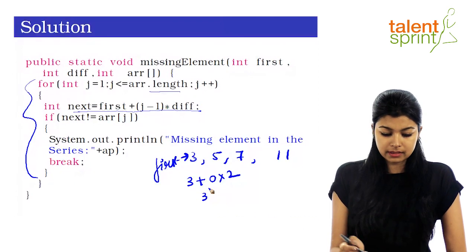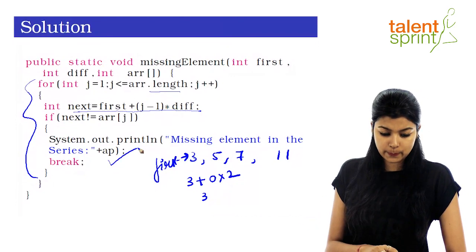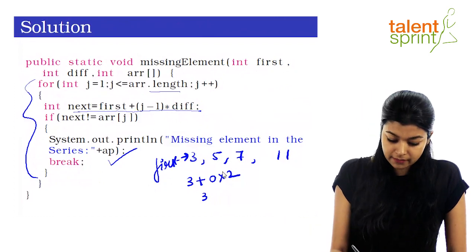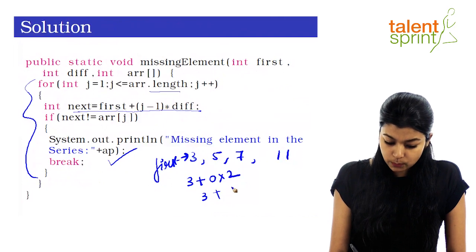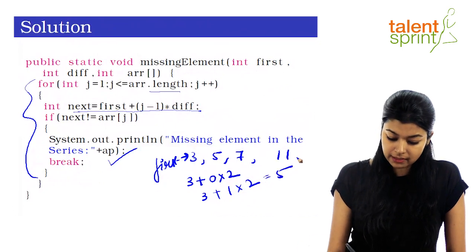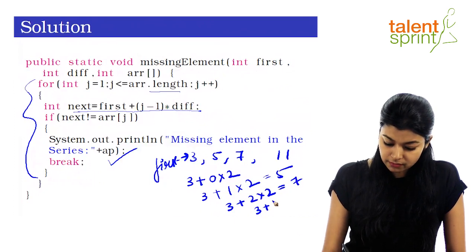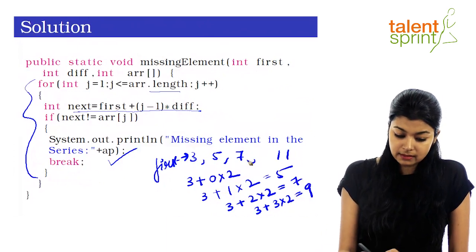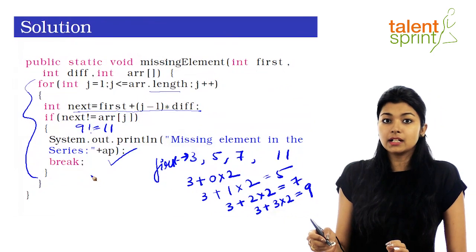Similarly, for the next number: first + (j-1) × difference = 3 + 1 × 2 = 5, which is correct. Continuing the same formula through each iteration, we eventually get to 9. Since 9 is not equal to 11 in the array at that position, we finally print our missing element: 9.